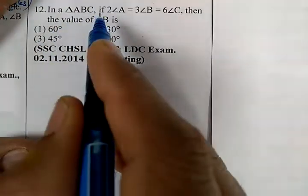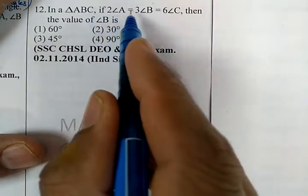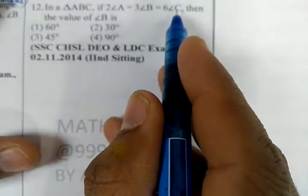In a triangle ABC, given that twice of angle A is equal to twice of angle B is equal to six times angle C.